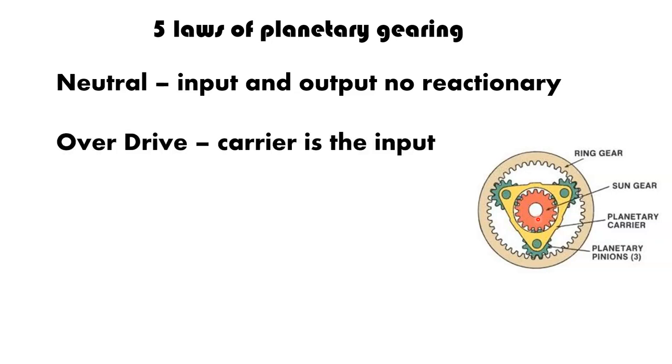The next one is overdrive. That is where your carrier is the input. Your carrier is always going to be the input. Your output could either be the ring or the sun. The difference between the two is you're going to get two different types of outputs when you set it up that way. But it's going to have a different range between that depending on which one you use. So, you've got technically two overdrives. But in overdrive, your carrier is always the input.